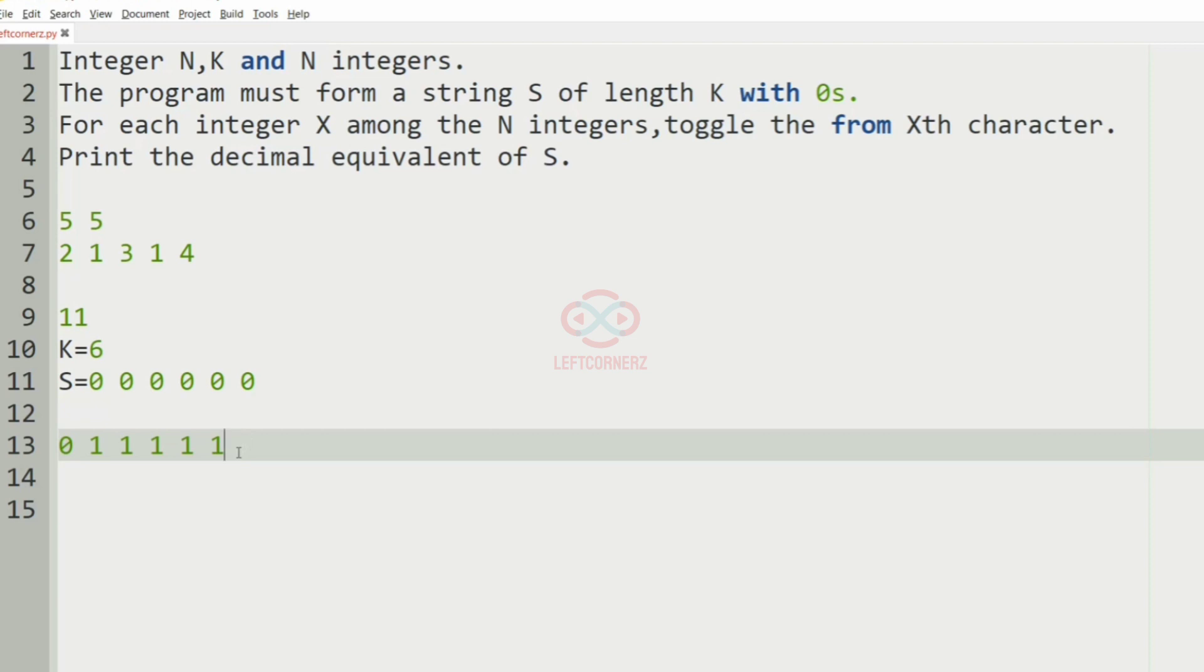So this will be the toggle for 2 and after this we have 1. So we'll toggle from the first position itself.